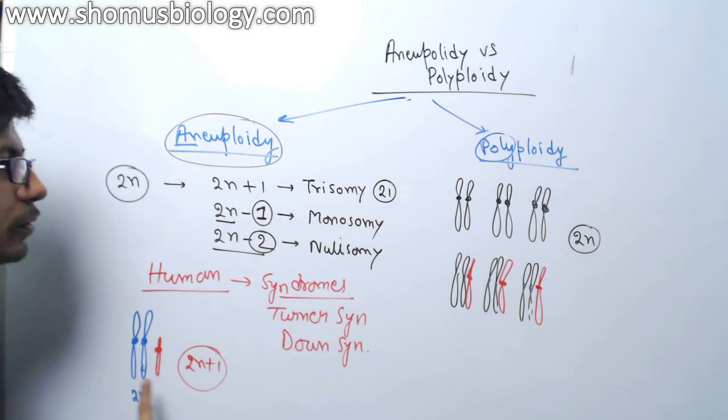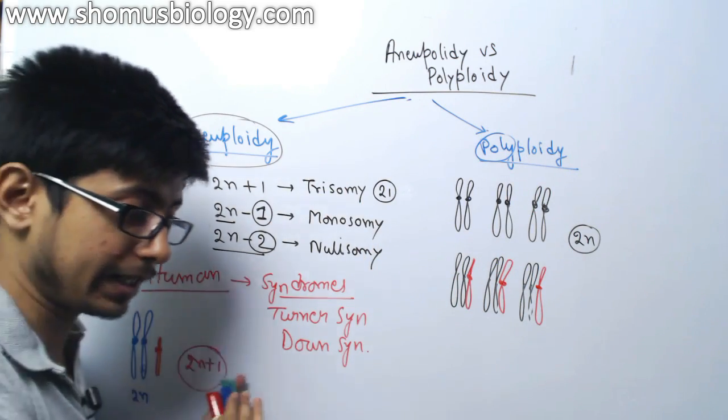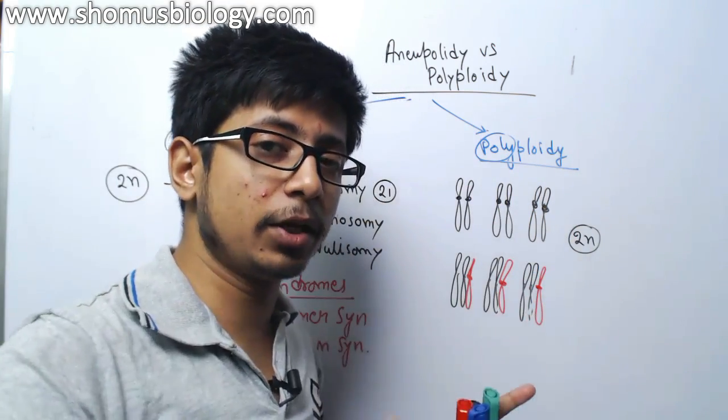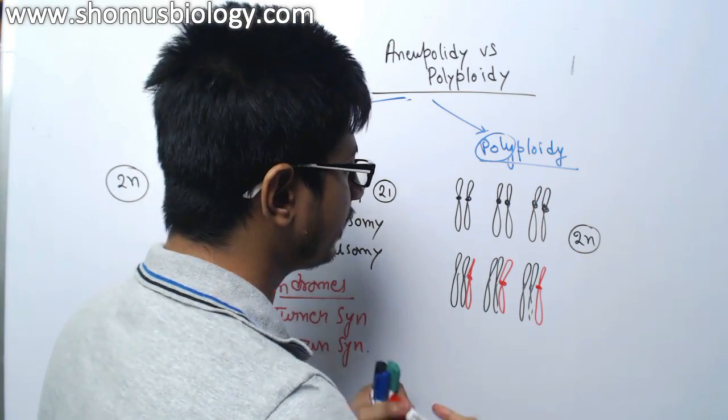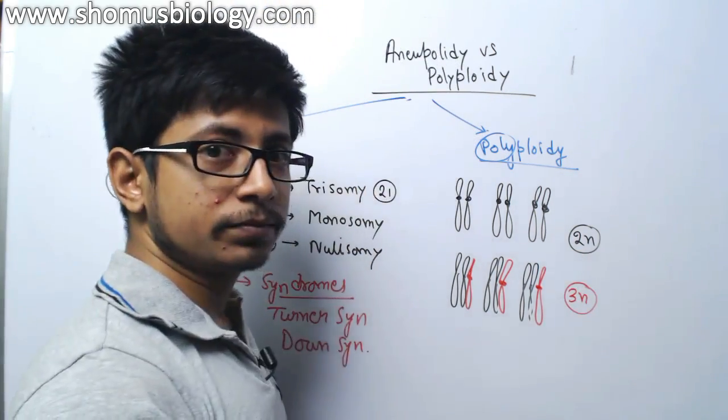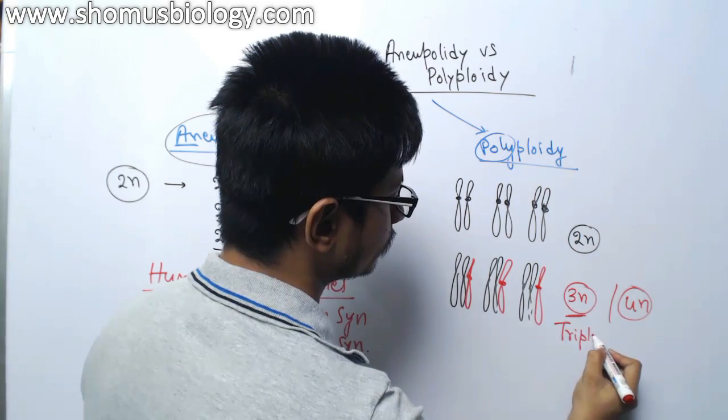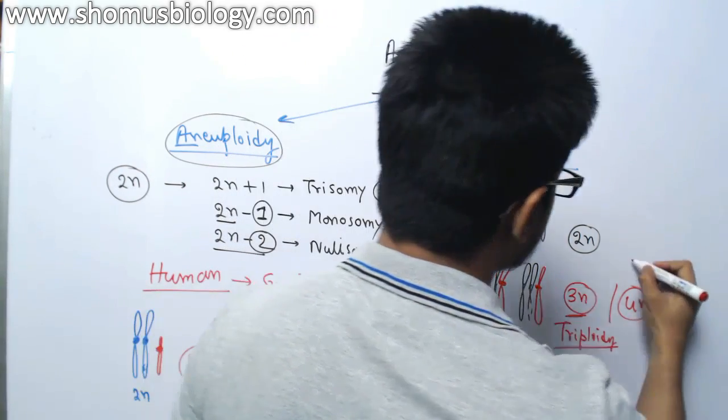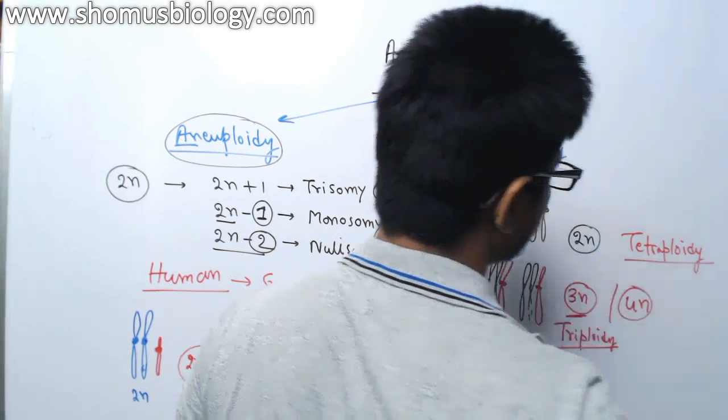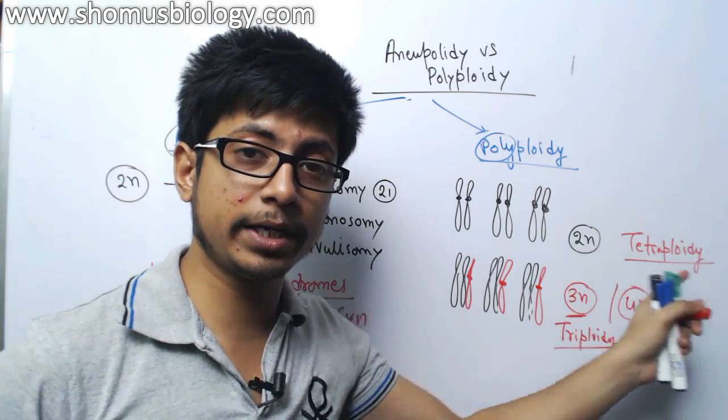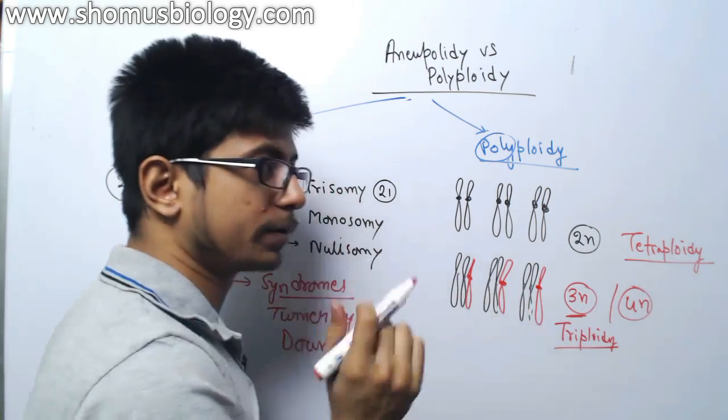See the difference between aneuploidy and polyploidy. In aneuploidy, one chromosome can be added, it can be deleted. But in polyploidy, whenever it is added or deleted, it will be in the set. Earlier it was 2n, now it becomes 3n. It could become 4n. 3n means triploidy. 4n becomes tetraploidy. Tetraploidy, pentaploidy, hexaploidy, septaploidy, octaploidy.